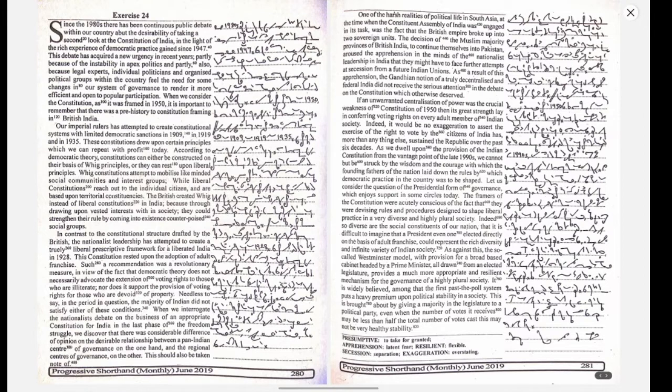Let us consider the question of the presidential form of governance, which enjoys support in some circles today. The framers of the constitution were acutely conscious of the fact that they were devising rules and procedures designed to shape liberal practice in a very diverse and highly plural society. Indeed, so diverse are the social constituents of our nation that it is difficult to imagine that a president, even one elected directly on the basis of adult franchise, could represent the rich diversity and infinite variety of Indian society.